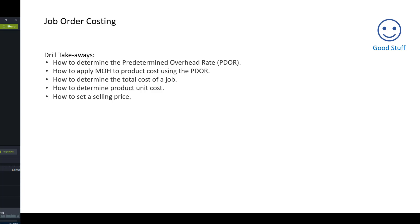Chapter 2, Comprehensive Problem. Hello all. Now that we have an understanding of job order costing, it's time to do a comprehensive problem. The drill is designed to show you how to determine the predetermined overhead rate, or PDOR, how to apply manufacturing overhead to product costs using the PDOR, how to determine the total cost of a job, how to determine product unit costs, and how to set a selling price using a markup on cost. We will use a plant-wide PDOR to solve our problem.